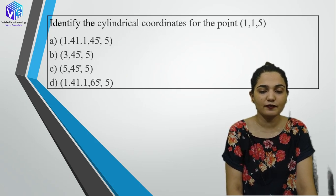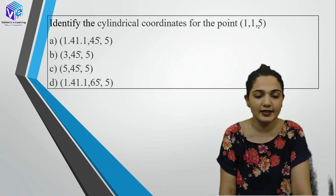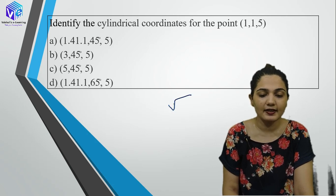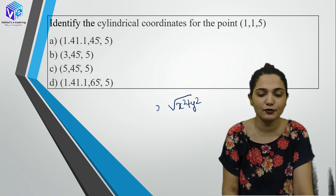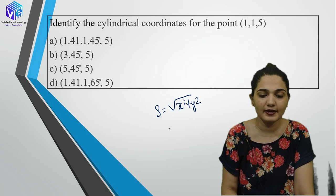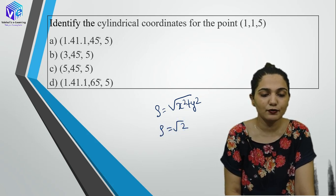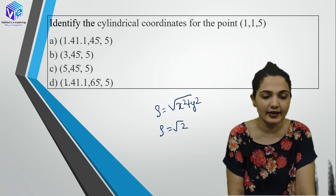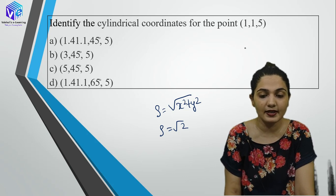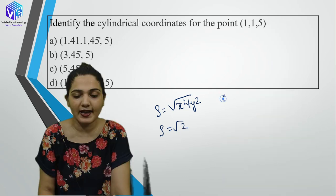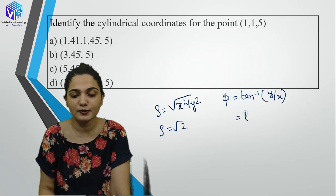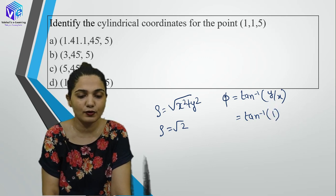Identify the cylindrical coordinates of point (1, 1, 5). The Z coordinate stays as 5. ρ = √(x²+y²) = √(1+1) = √2 ≈ 1.414. Then φ = tan⁻¹(y/x) = tan⁻¹(1/1) = tan⁻¹(1) = 45°. So the answer is A: (1.414, 45°, 5).